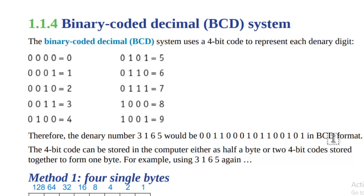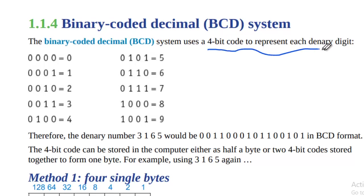BCD is basically the Binary Coded Decimal system — so for every digit there is a binary representation. For example, zero has a binary of all four zeros. The main point is that we are using four bits to represent each denary digit.